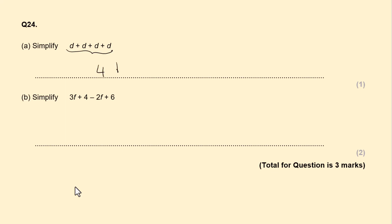Question 24. Simplify a + d + d + d. That's 4d. Question b. 3f take away 2f is f. Plus 4 plus 6 is plus 10. f plus 10.